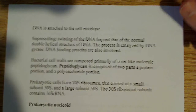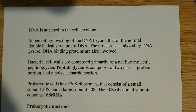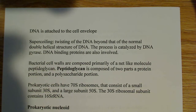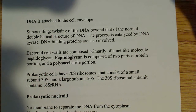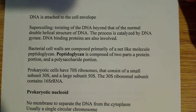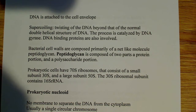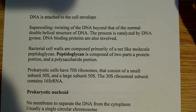Supercoiling is the twisting of the DNA beyond the normal double helical arrangement. Because we know DNA is in a double helix, even though it's a circular chromosome, it gets coiled or spun even more than it already is. The process is catalyzed by a DNA gyrase enzyme and also involves DNA-binding proteins. So prokaryotes do have a process of compacting their DNA — it's just not as complex as what we have.